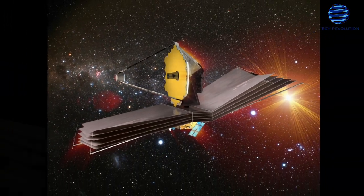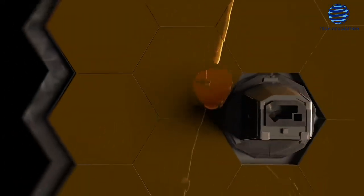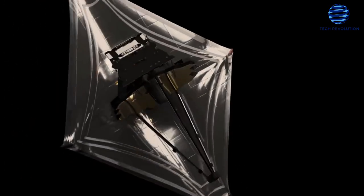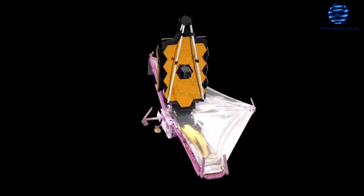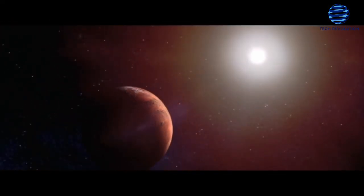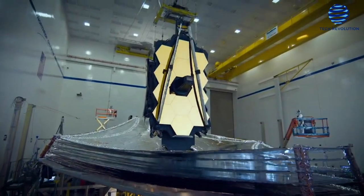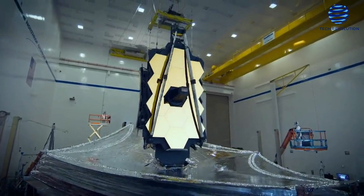The James Webb Space Telescope, the largest and most expensive and complex space telescope ever built, is now in space, heading to its final destination. Webb is currently located roughly 1 million kilometers away at Lagrange Point 2. It is the world's largest and most powerful space telescope.